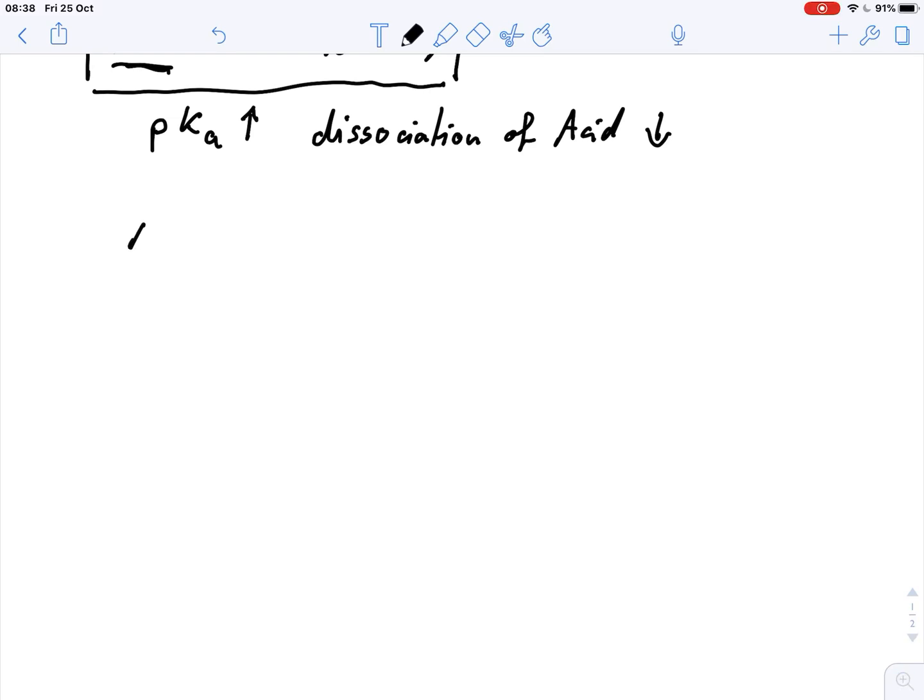And we can write A- plus water, and again we have an equilibrium, gives us HA plus OH-.